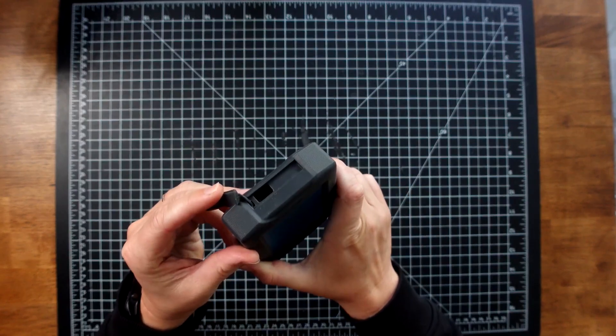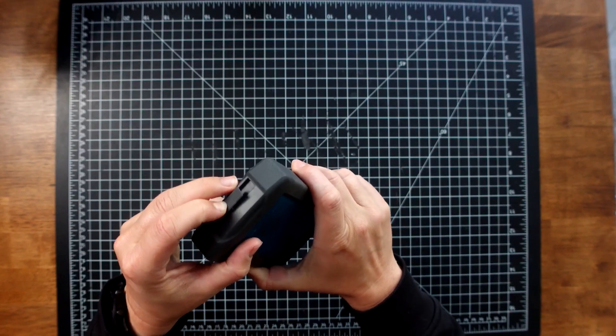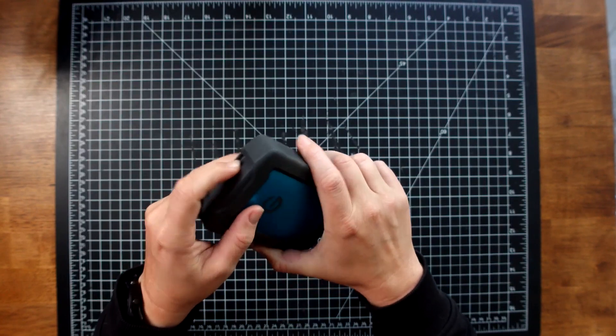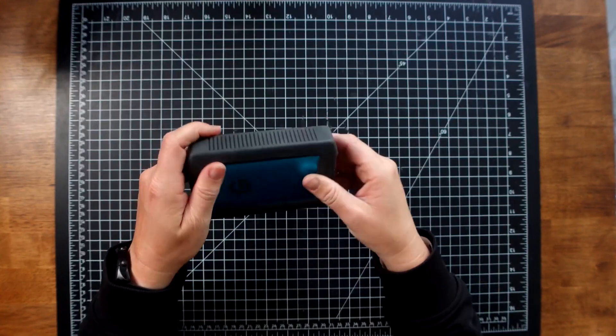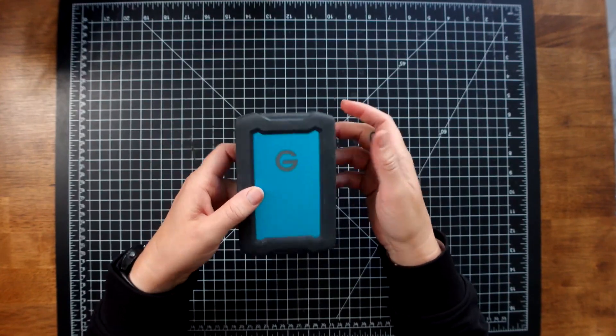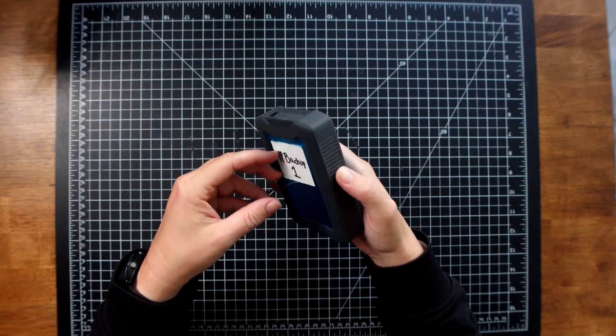You have the dust cover for the USB-C port, which is really nice. I do like that a lot. And then you have this rubber protective edging around the whole thing, which I definitely like.